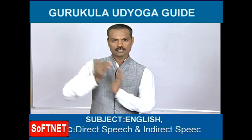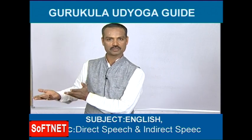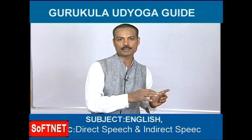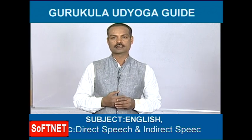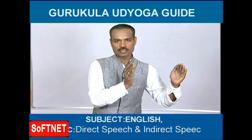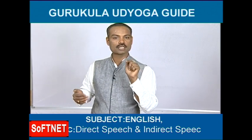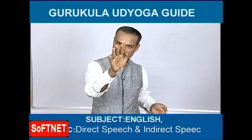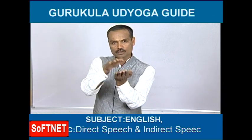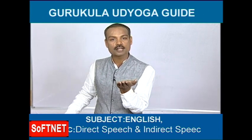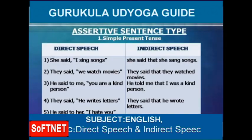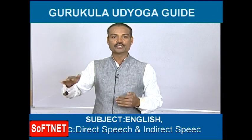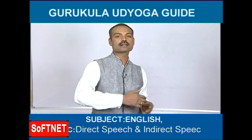Fifth example: 'He said to her, I hate you.' 'He' is written as it is. 'Said to' becomes 'told'. 'Her' is written as it is. Comma becomes 'that'. So: 'He told her that...' In inverted commas: 'I hate you' — simple present tense, V1 'hate'. 'I' becomes 'he' because we are reporting about Kiran. 'You' becomes 'her'. 'Hate' becomes 'hated' (simple past). Answer: 'He told her that he hated her.'